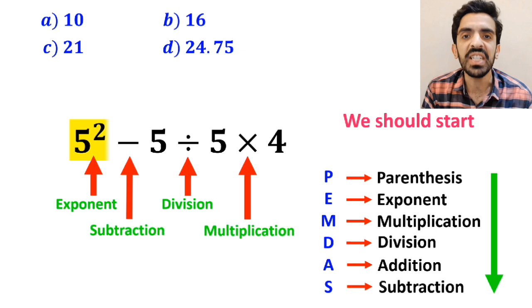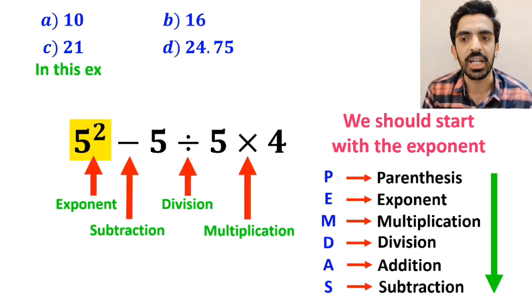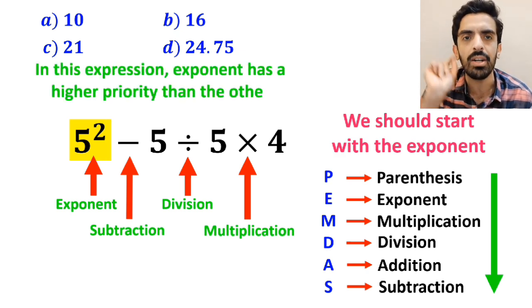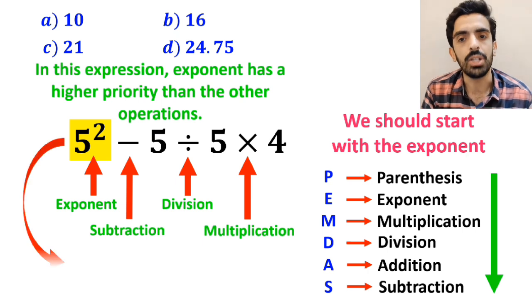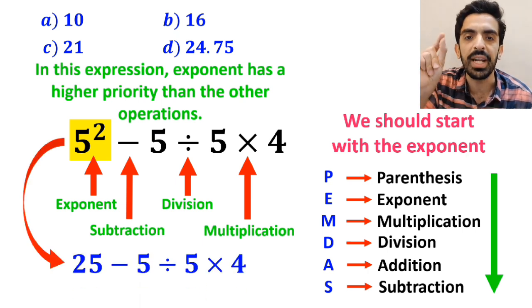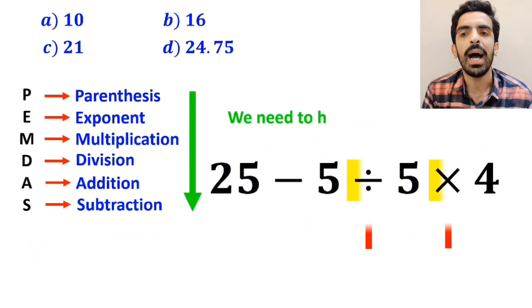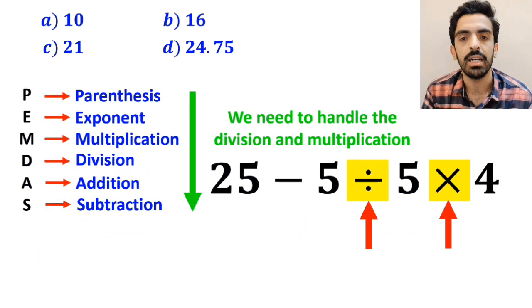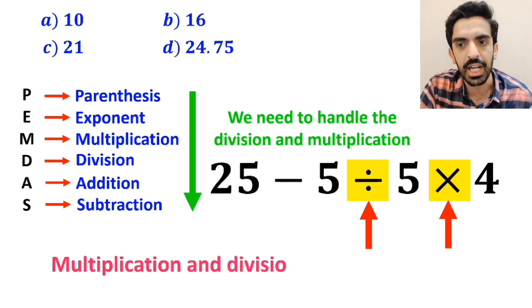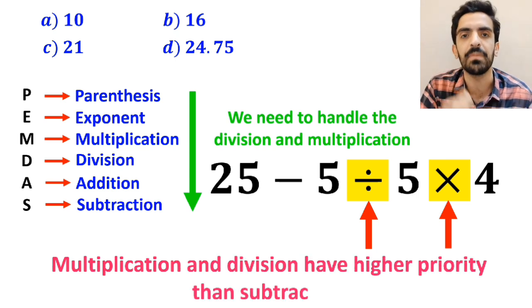We should start with the exponent because in this expression exponent has a higher priority than the other operations. So this expression simplifies to 25 minus 5 divided by 5 times 4. In the next step we need to handle the division and multiplication since multiplication and division have higher priority than subtraction.